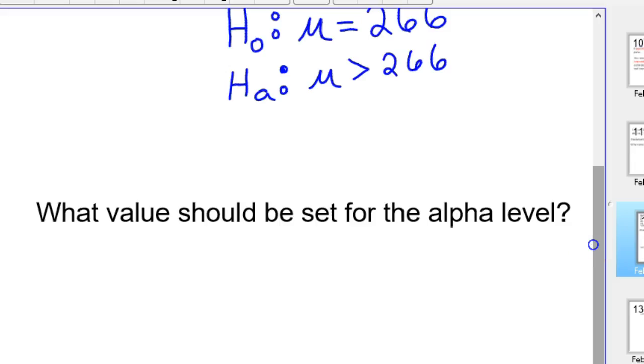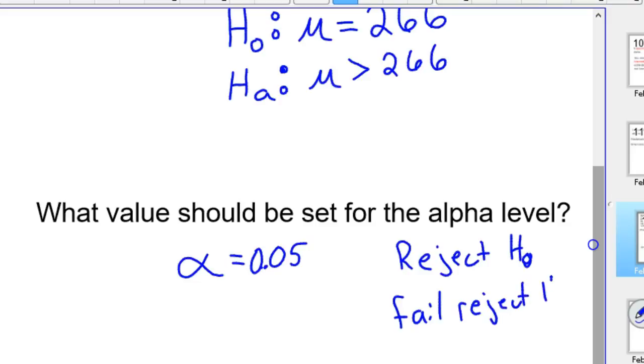We should also set an alpha level. What should the alpha level be set for? In most cases, we're just going to set that at 0.05. If it's below 0.05, we're going to reject the null hypothesis. If it's greater than 0.05, we'll fail to reject. You either reject H₀ or you fail to reject H₀, and that alpha level determines that.